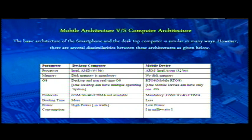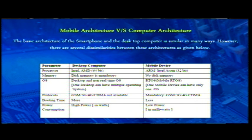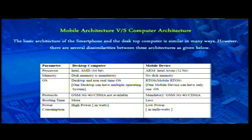In desktop computers we have Intel and AMD processors. Computers require disk memory, which is not available in mobile operating systems. Mobile systems require a Real-Time Operating System (RTOS) because data must be communicated at runtime, whereas desktops do not require real-time communication. Furthermore, computers have a longer booting time while mobile operating systems boot much faster, making mobile architecture very different from computer system architecture.